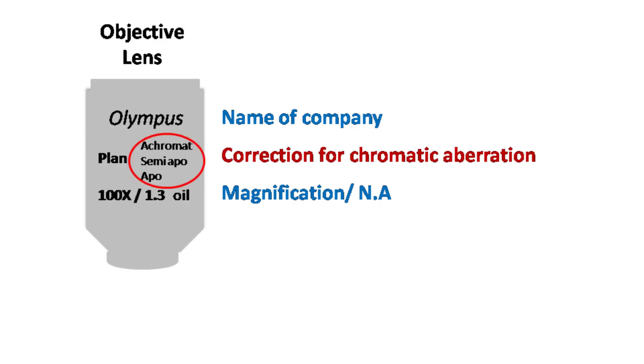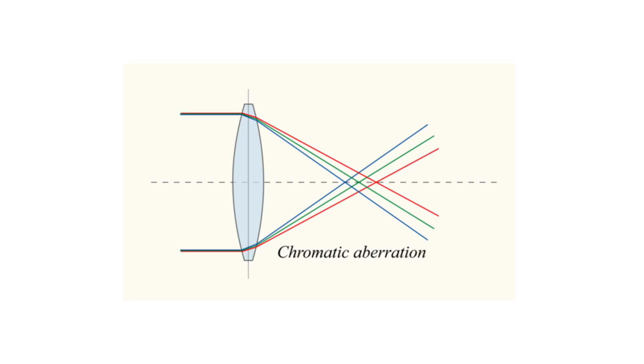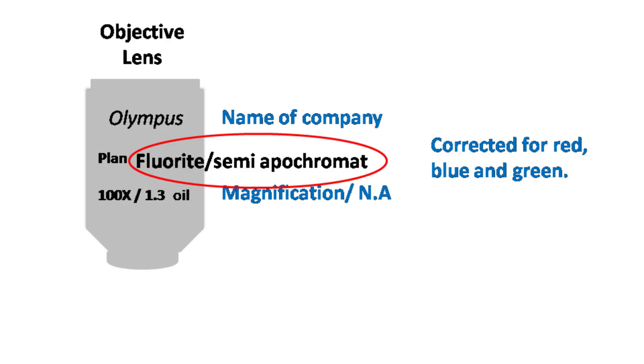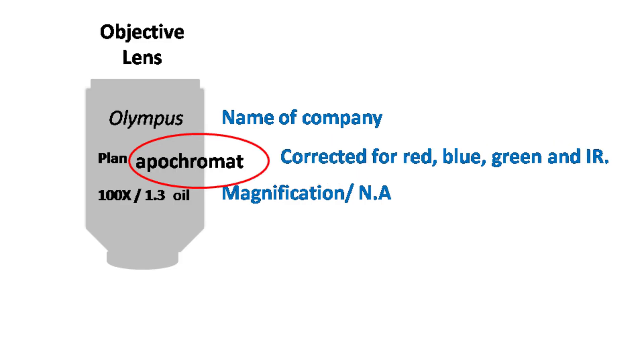Corrections for chromatic aberration. Chromatic aberration is a phenomenon in which the lens fails to focus all the colors of the light at the same point. It occurs because the lens has different refractive index for different wavelengths of light. The term achromatic lens means it is corrected for two colors, red and blue. The term fluorite or semi-apochromate means the lens is corrected for three colors: red, blue and green, and infrared.